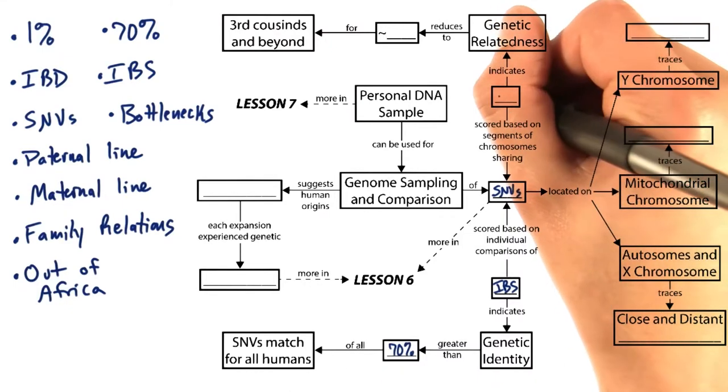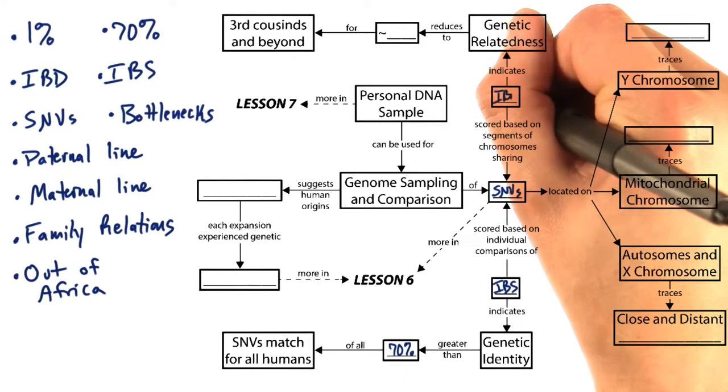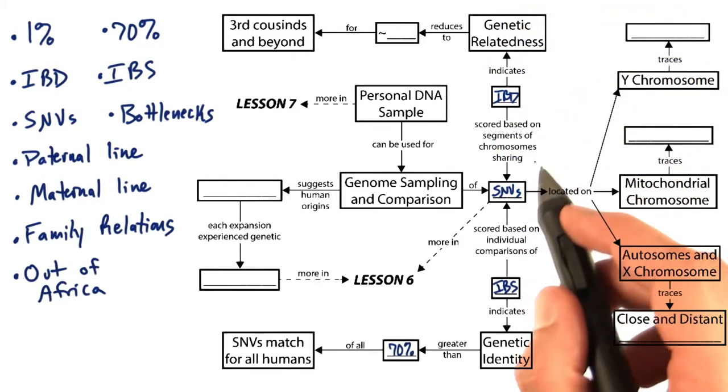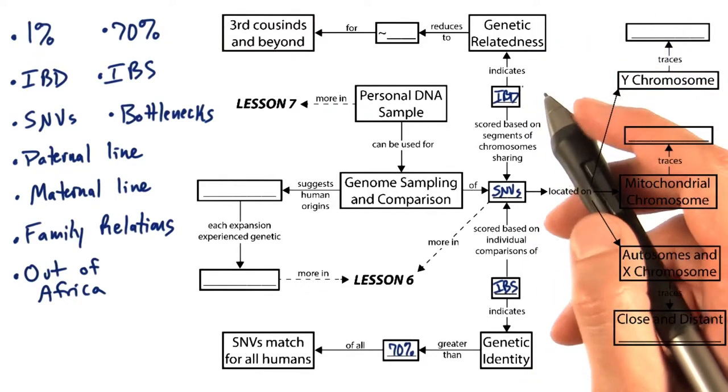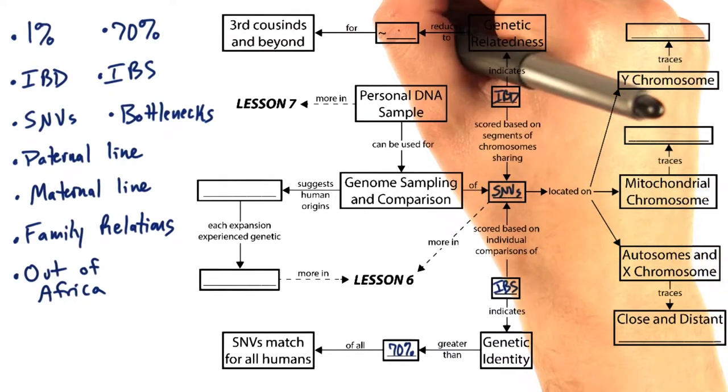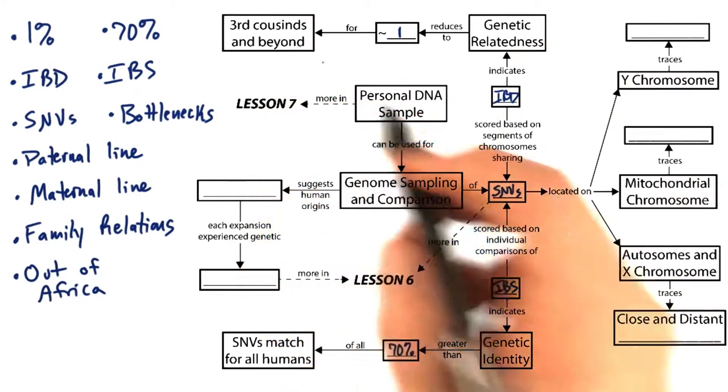Now another kind of scoring involves IBD, or identity by descent, which scores based on segments of chromosome sharing individual SNVs. And this indicates genetic relatedness, which can reduce to about 1% for third cousins and beyond.